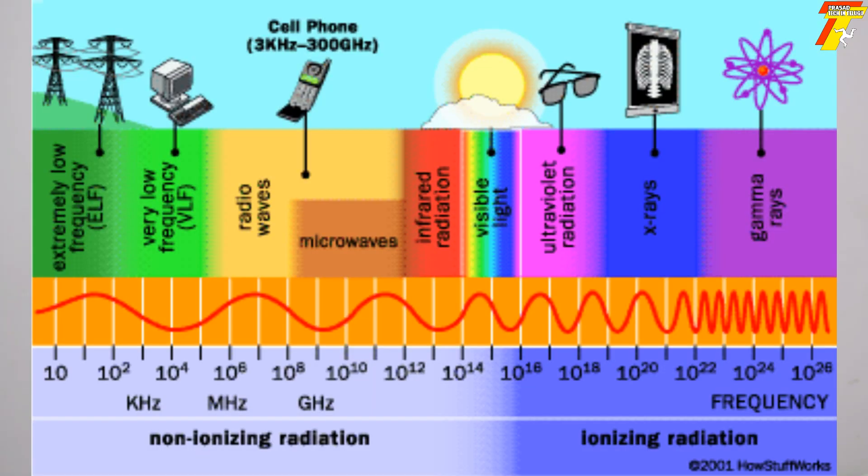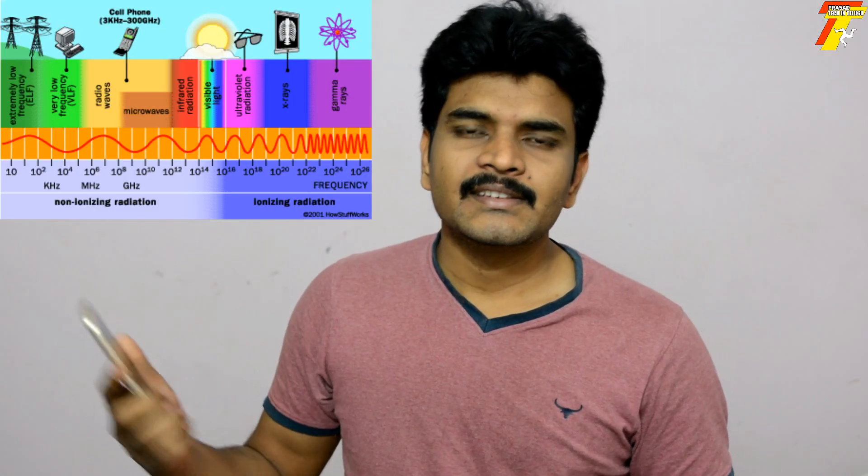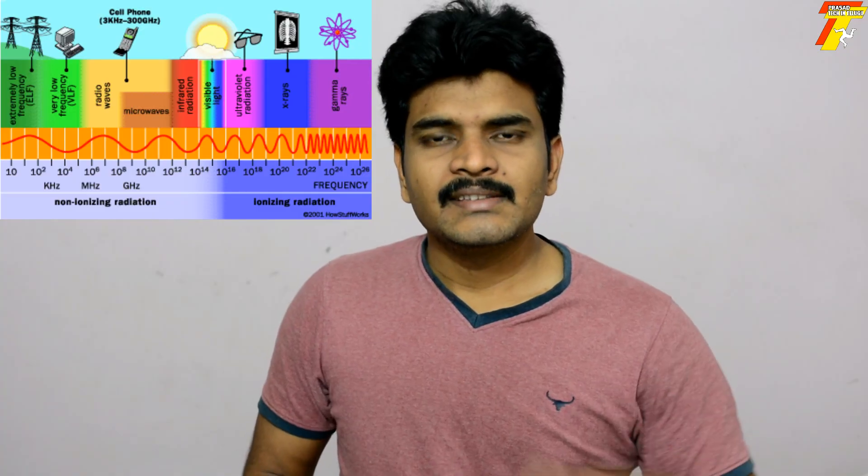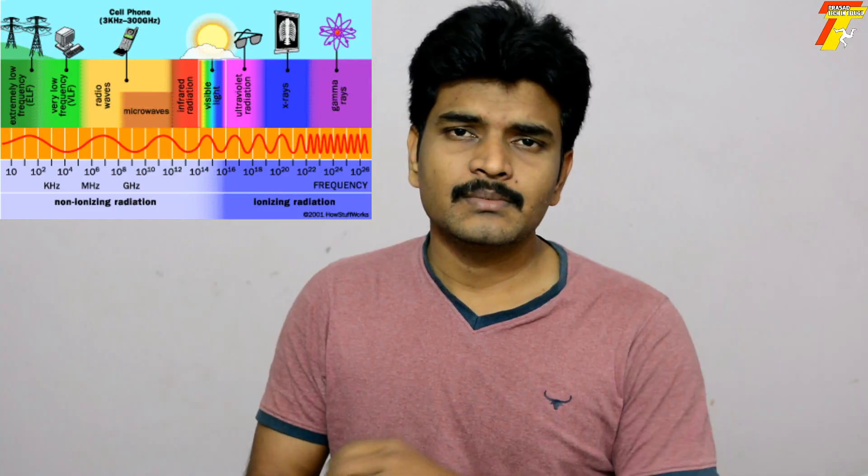Radio frequency radiation is very low on the radiation spectrum. Take a look at the frequency chart. Mobile phone radiation is non-ionizing radiation, not ionizing radiation. Ionizing radiation — like nuclear power and X-rays — can break the chemical bonding in your body. Non-ionizing radiation, like from mobile phones, cannot break chemical bonds.